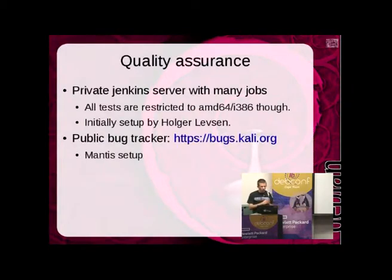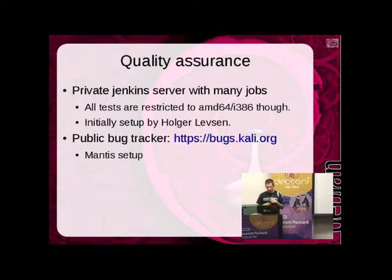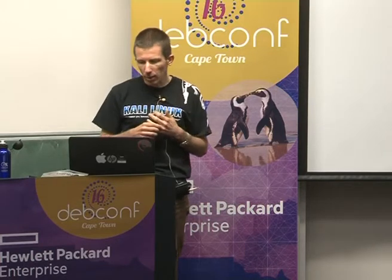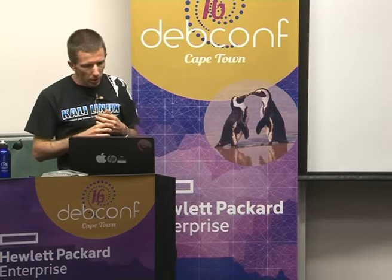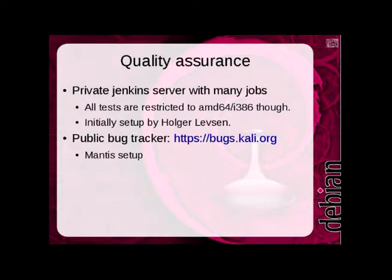For quality assurance we have a private Jenkins server with many jobs. We run tests only on AMD64 and i386 architectures — no tests for other architectures. It was initially set up by Olga Levson with a setup similar to what we now have on jenkins.debian.net. We also have a public bug tracker using Mantis.